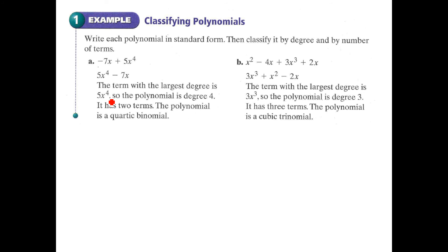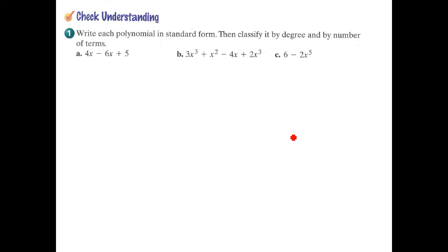Write each polynomial in standard form, then classify it by degree and by number of terms. So if the original problem here was negative 7x plus 5x to the fourth, we need to put it in the right order. So biggest power first, 5x to the fourth minus the 7x. So our degree is 4 and it has two terms. This is a quartic because it's to the fourth, binomial, two terms. Let's put this one in order here. So 3x cubed, the largest, all the way down to the smallest power, 2x to the first. The term with the largest degree is 3x cubed. Our degree here is 3, and this is a trinomial, 1, 2, 3 terms, and it's a cubic since it's degree of 3. So a cubic trinomial. Three for you to try. Write it in standard form, then classify it by degree and by number of terms.